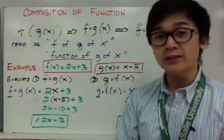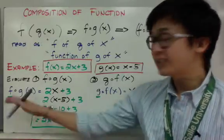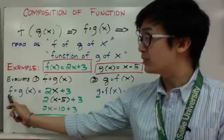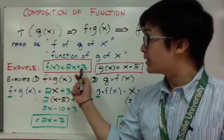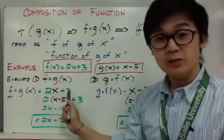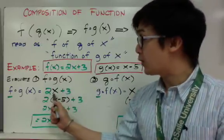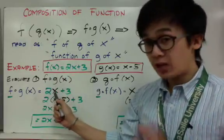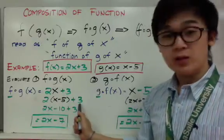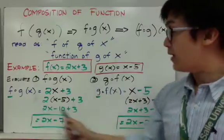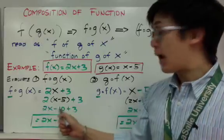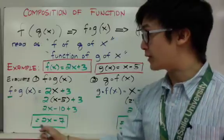To evaluate f of g of x, the technique is to always look at the first letter. Since the first letter is f, I use f of x, which is 2x plus 3, and replace every x with g of x, which is x minus 5. So I get 2 times (x minus 5) plus 3. Applying the distributive property gives 2x minus 10 plus 3, and combining like terms, f of g of x equals 2x minus 7.